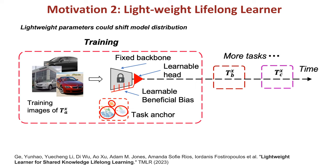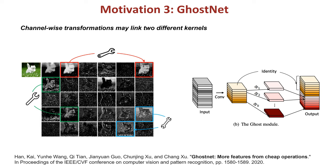The second is Lightweight Low-rank adaptation, which shows that even a small number of parameters can significantly shift the model's representation space. Lastly, GhostNet reveals that the feature maps of a single convolutional layer can be highly similar following a linear transformation.